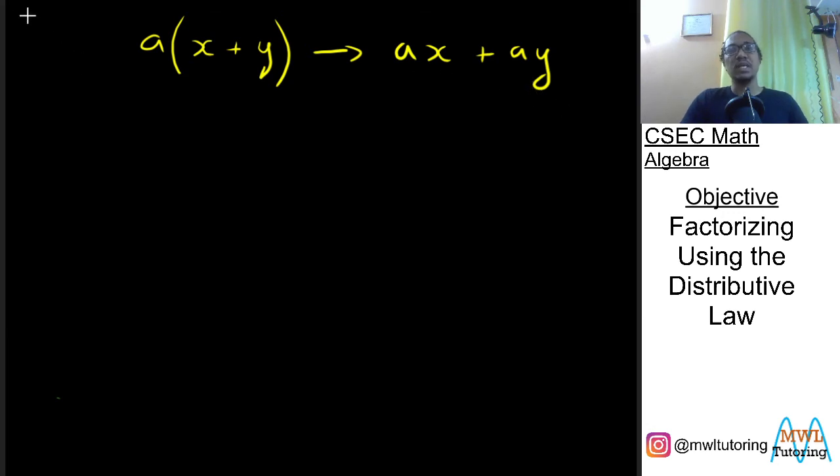And how we did that is we took this element on the outside of the brackets and we distributed it among the terms on the inside of the bracket. And we did that through multiplication. We said a multiplied by x gave us ax and a multiplied by positive y gave us positive ay.